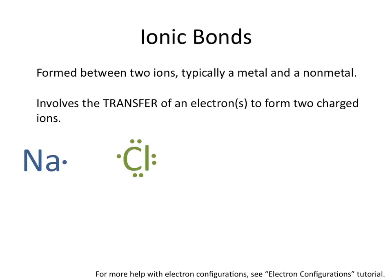In the example of the bond formed between sodium and chlorine, sodium essentially transfers its electron to chlorine, forming a positively charged sodium ion and a negatively charged chlorine ion.